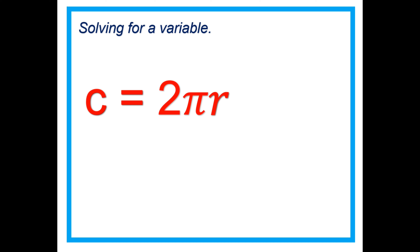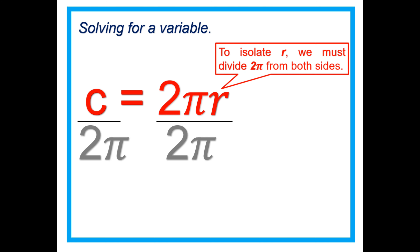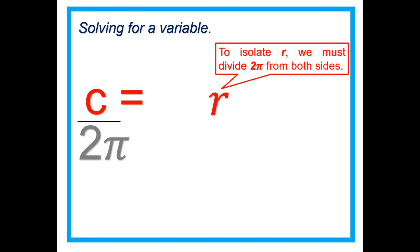The formula is C equals 2πr. To isolate r, we must divide 2π from both sides: 2πr divided by 2π, and C divided by 2π. That cancels 2π on the right side, leaving r isolated.